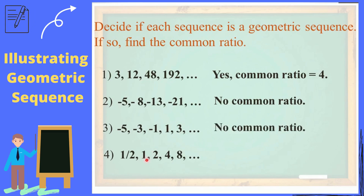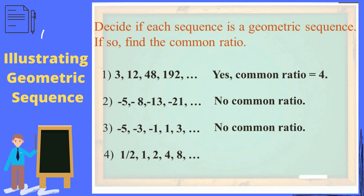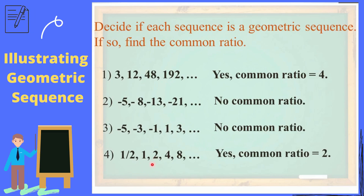What about in number 4? In the sequence 1 half, 1, 2, 4, 8, and so on — is there a common ratio? Yes, there is a common ratio. And the common ratio is 2. 1 divided by 1 half is 2. 2 divided by 1 is 2. 4 divided by 2 is 2. 8 divided by 4 is 2 also. So therefore, it is a geometric sequence and the common ratio is 2.